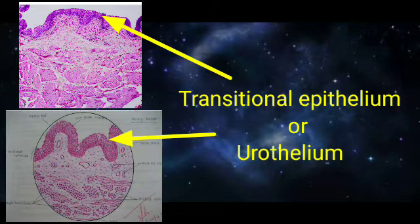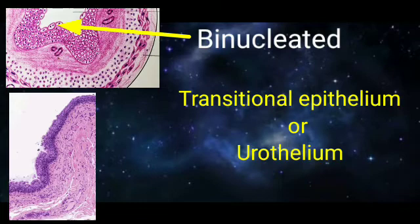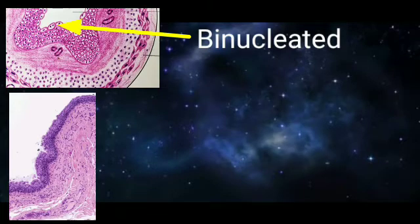The transitional epithelium is also called urothelium. It is made up of various cellular layers: the basal layer is cuboidal or columnar, above which there are four to five layers of polygonal cells, and the superficial most layers show umbrella-shaped cells. Some umbrella-shaped cells are binucleated, showing two nuclei in the cytoplasm.